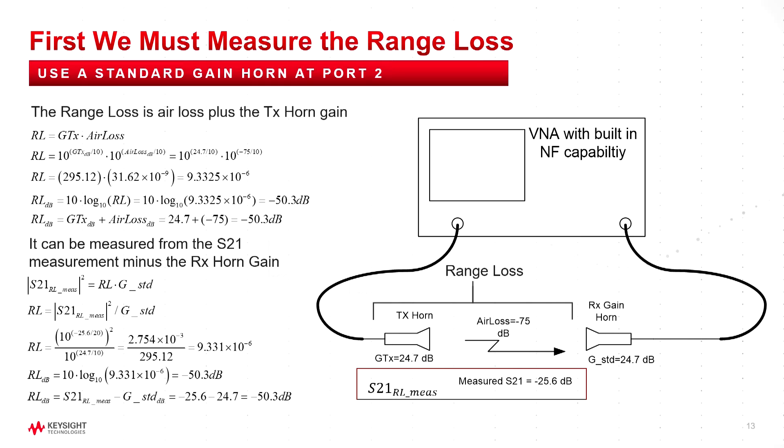So in this case, I have a 25 dB is the S21, but the standard gain horn has 24 dB, so we have to subtract it off. And that gives me my 50 dB range loss.